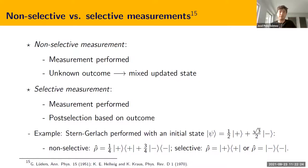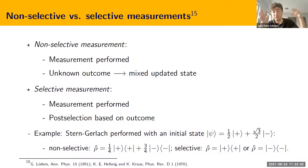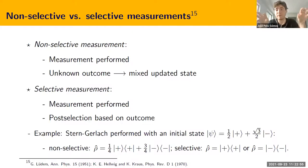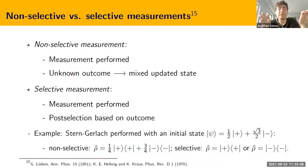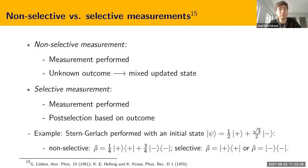Why are non-selective measurements the ones we need to study to check compatibility with relativity? If we want to check for signaling, someone performs a measurement in one region and we ask whether it signals to another observer in a space-like separated region. That observer can at most know that a measurement is being performed — perhaps because they agreed beforehand — but they definitely do not have access to the outcome. Therefore, if they are modeling the state of the field, they must apply a non-selective update. That is why, for checking whether we can signal to space-like separated observers, the update we must consider is always non-selective.